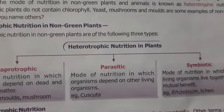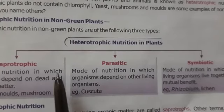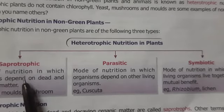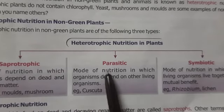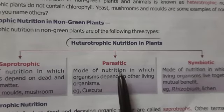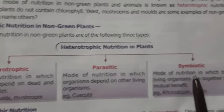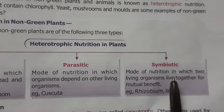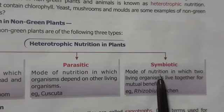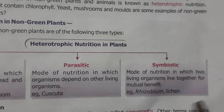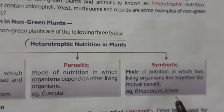What were the three types of heterotrophic nutrition? The first was saprotrophic, in which organisms depend on dead and decaying organisms. The second was parasitic, in which organisms depend totally on the host plant. The third was symbiotic, in which two organisms live closely and both get benefit from each other — examples are rhizobium and lichen.